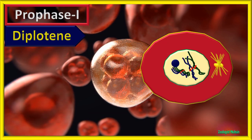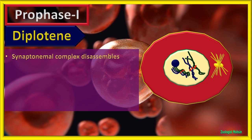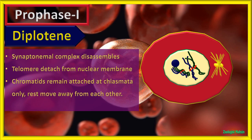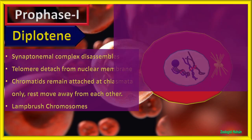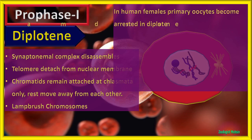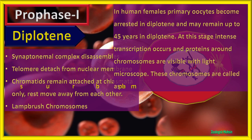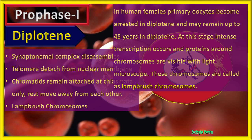The next phase of prophase 1 is diplotene. The synaptonemal complex disassembles, allowing the chromatids to move away from each other. Telomeres detach from the nuclear membrane as seen in the animation. Chromatids remain attached only at chiasmata while the rest move apart. Importantly, in human females and other vertebrates, primary oocytes become arrested in diplotene and may remain so for up to 45 years. At this stage, intense transcription occurs and proteins around chromosomes are visible with a light microscope — these are called lampbrush chromosomes.